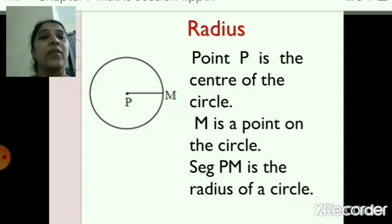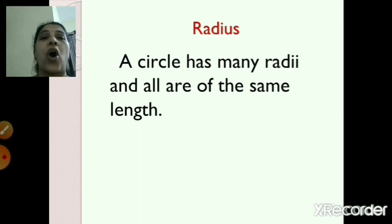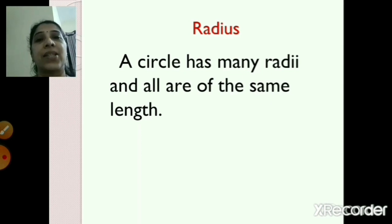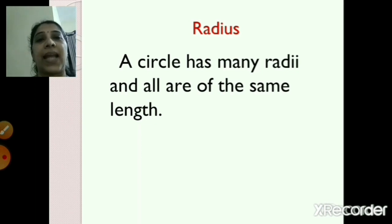A circle has many radii and all are of the same length. So a circle will have many radii and all these radii will be of the same length. Radius is the singular form and radii is the plural form of radius. So this may be asked for fill in the blanks, so you should know this.